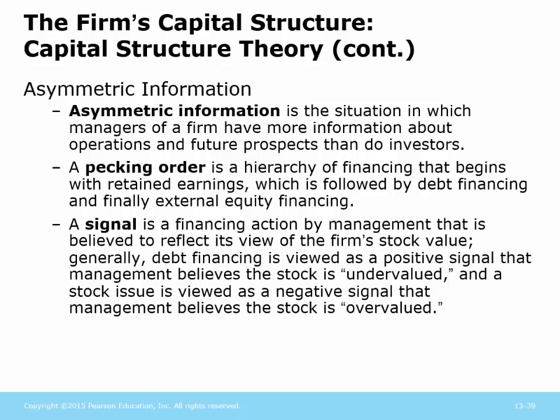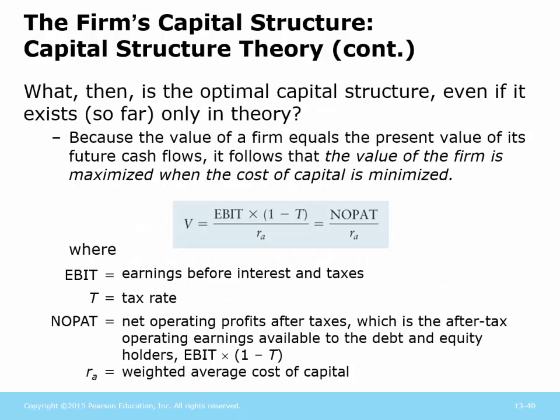Let's look at some theory. The value of a company is essentially EBIT — operating profit — multiplied by one minus the tax rate, divided by the weighted average cost of capital. We've left out interest from the income calculation. We're going to assume that the numerator is fixed, so it doesn't change. The only way to make value go up is to reduce the weighted average cost of capital.